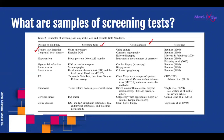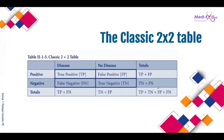Let's go to screening tests important to OB-GYN. For cervical cancer, you screen using a Pap smear. Once you get the result of the Pap smear, you confirm by either colposcopy or biopsy. When you say screening test, we are talking about sensitivity, specificity, positive predictive value, and negative predictive value.